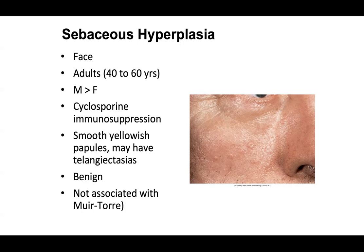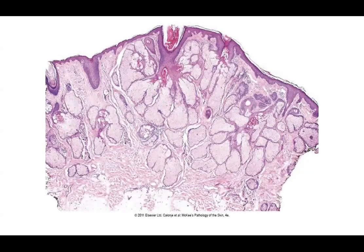Sebaceous hyperplasia is not associated with Muir-Torre. So when you think about sebaceous neoplasms like sebaceous adenoma, sebacioma, and sebaceous carcinoma — which are associated with Muir-Torre — that's not the case for sebaceous hyperplasia. Here's an example: in a sebaceous-rich area like the face or nose, you're going to see sebaceous hyperplasia with several well-mature sebaceous lobules palisading around hair follicles, extending into the deep dermis almost to the subcutaneous tissue. This is a pretty robust example.